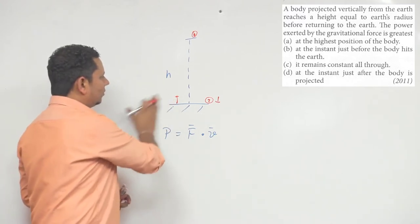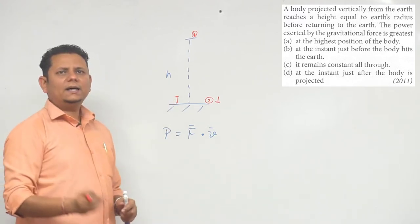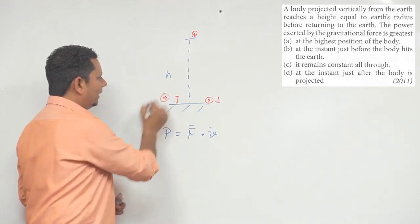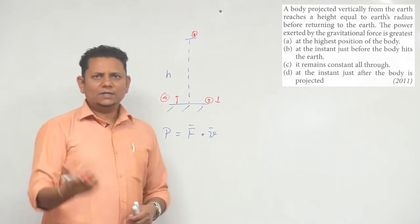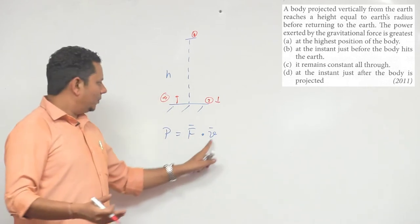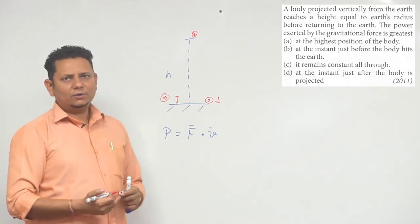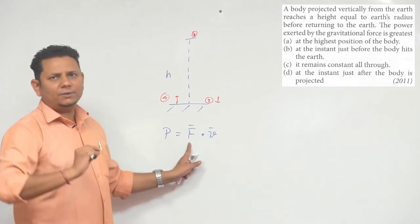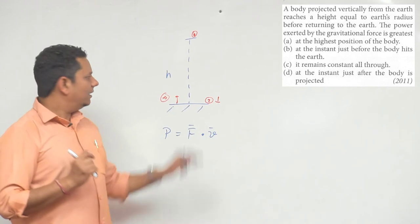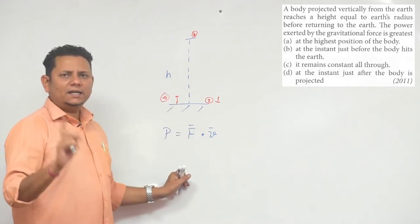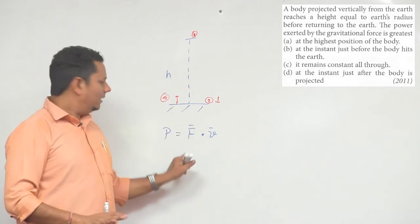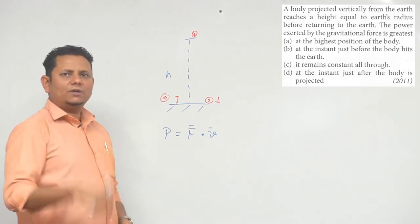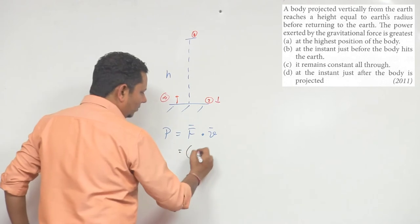Option C is of course wrong because F·v will keep changing. The force near Earth is GMm/r², and the force will be towards the center of Earth in the negative direction, so this will be equal to GMm/r².